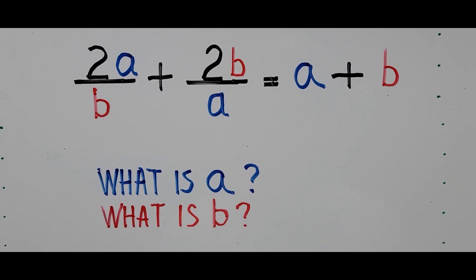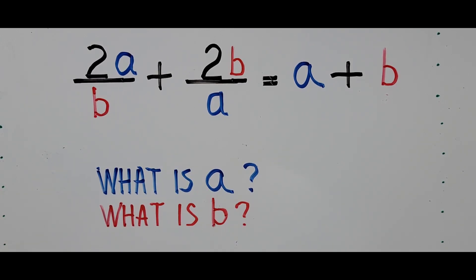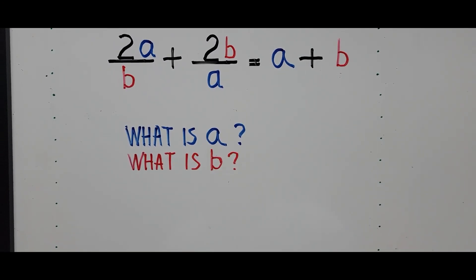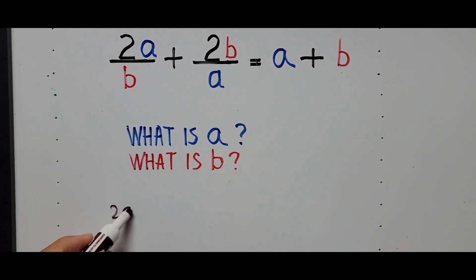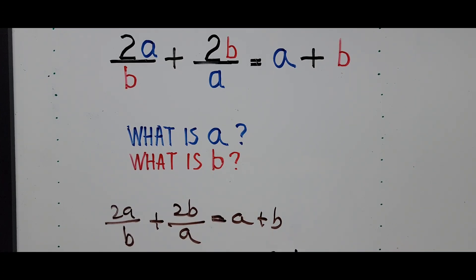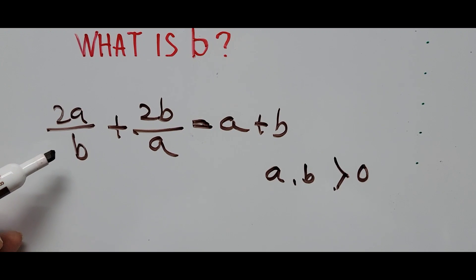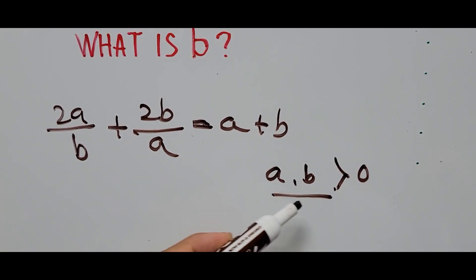Alright, we start solving the equation. If you notice, the rational equation implies that the value of a and b must be a positive integer — it cannot be zero. That's the condition. So we rewrite the rational equation: 2a divided by b plus 2b divided by a equals a plus b. The condition is that a and b must be greater than zero.